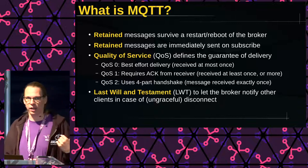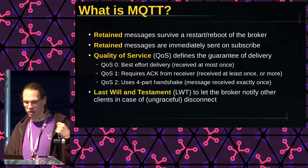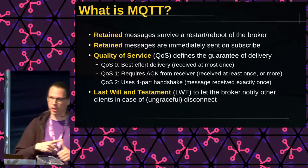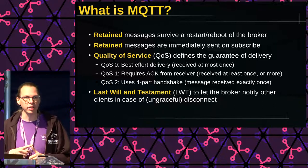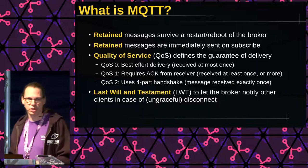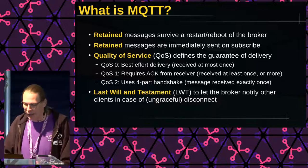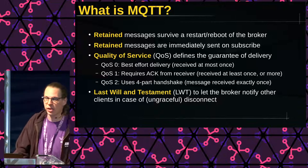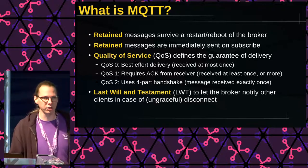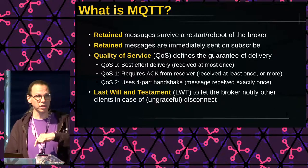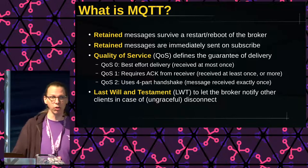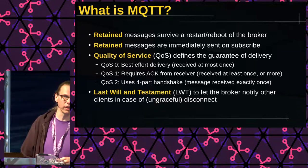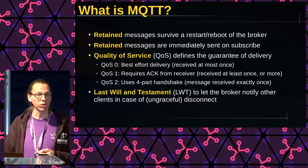The quality of service — the delivery guarantees — has three levels. QoS zero has no guarantee; it just tries once. QoS one requires an acknowledgement from the client, but this could mean the message is sent three times before the acknowledgement comes through, meaning the client receives the same message three times. If that is a toggle for a light switch, this is annoying. That's why you have QoS two, which will make sure the client only receives the message once and once only.